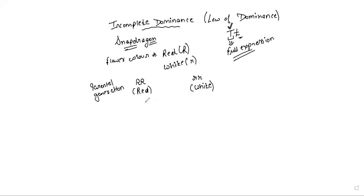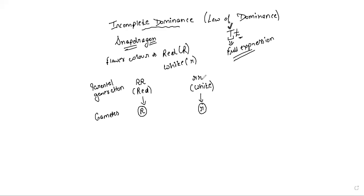These parents are responsible for the formation of gametes. Since this is a homozygous situation, all gametes are going to carry capital R — only one allele is possible here. For the second recessive situation, again this is homozygous, so only single type of gametes are possible, and these gametes carry small r. These are the possible gametes from the homozygous parents.